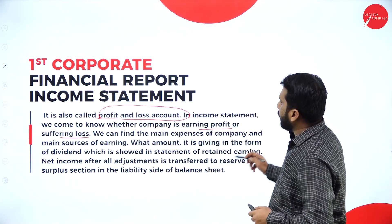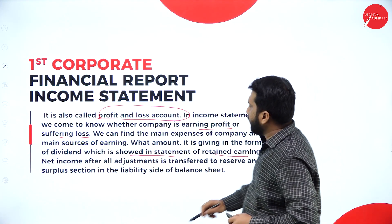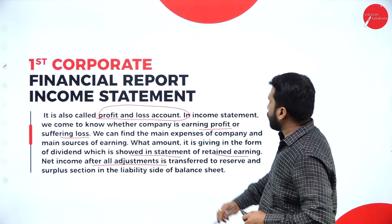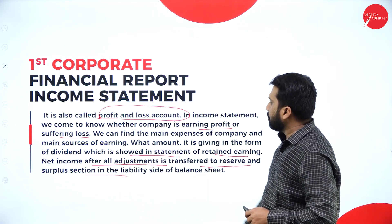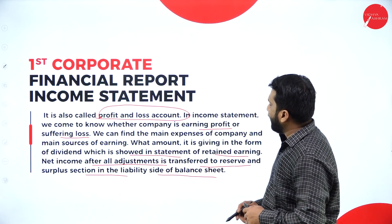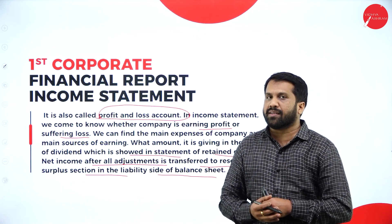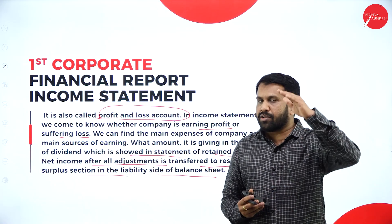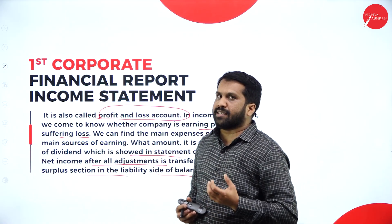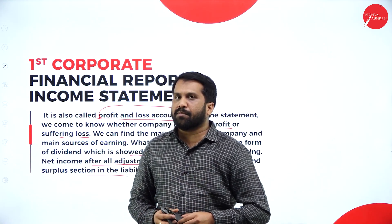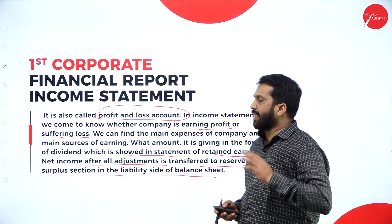The profit is given in the form of a dividend, shown in the Statement of Retained Earnings — net income after all adjustments. It is transferred to the Reserve and Surplus section in the liability side of the balance sheet. Whenever you have profit, the surplus will be positive; if you are under loss, it will be negative.